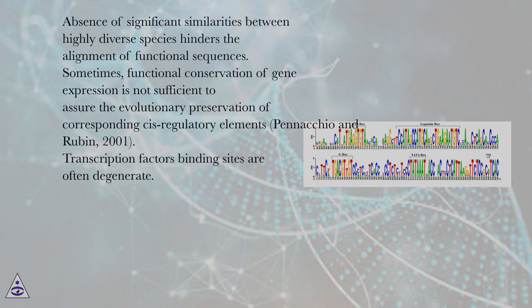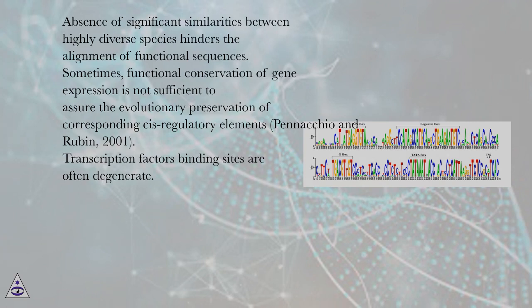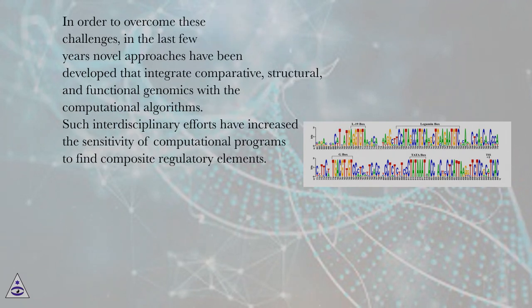A very high degree of conservation between two closely related species generally shows no clear signature of highly conserved motifs. Absence of significant similarities between highly diverse species hinders the alignment of functional sequences. Sometimes, functional conservation of gene expression is not sufficient to assure the evolutionary preservation of corresponding cis-regulatory elements (Pinocchio and Rubin, 2001). Transcription factor binding sites are often degenerate. In order to overcome these challenges, in the last few years novel approaches have been developed that integrate comparative, structural, and functional genomics with computational algorithms.